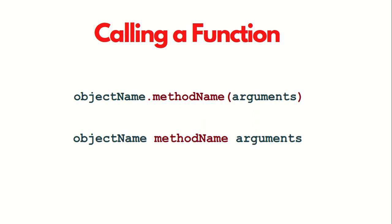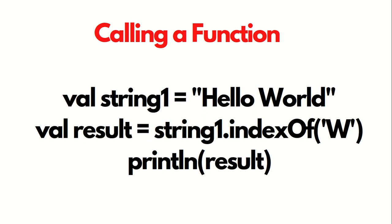In this code you can see: val string1 = "Hello World", val result = string1.indexOf('W'), println(result). In this code, string1 is the object that we are calling the method indexOf on, and 'W' is the argument we are passing.